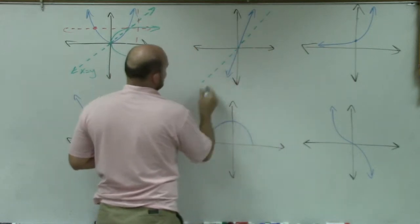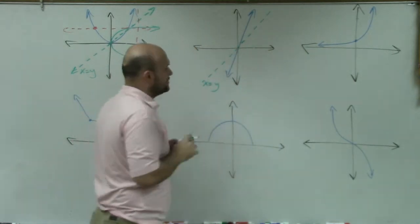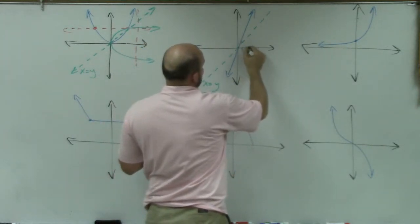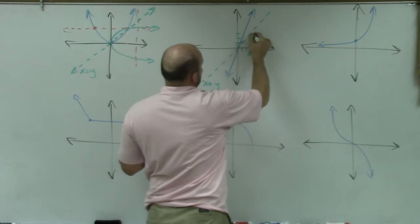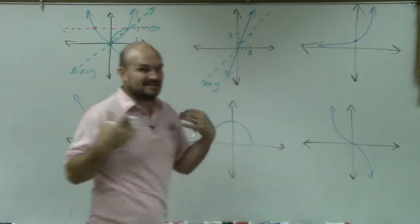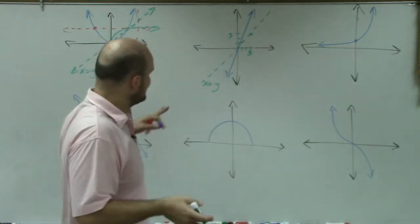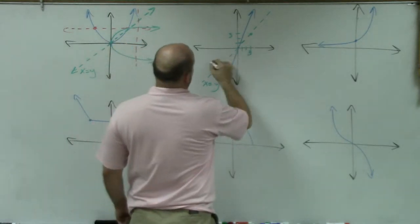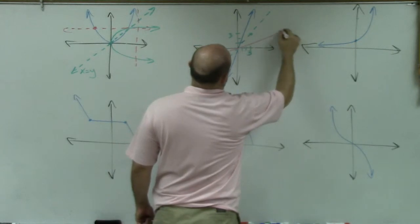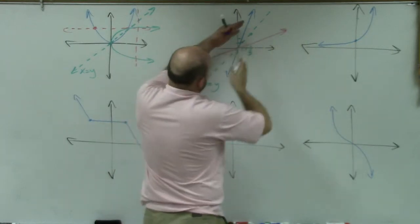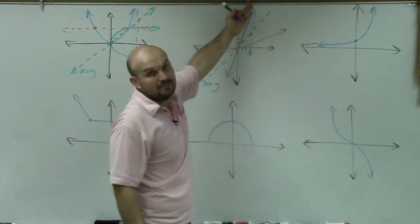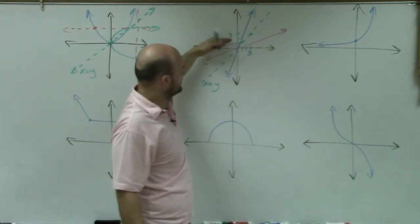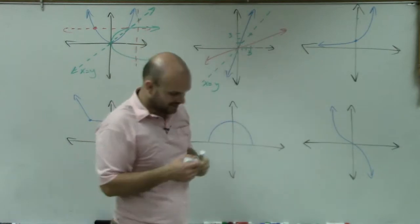The y equals x line means whatever x equals, y equals. So if x equals 3, y equals 3; if x equals 10, y equals 10 — it's a nice diagonal line. To graph the inverse, as I reflect it, whatever's above the line now goes below and whatever's below goes above. Over here, even though this is getting very close to being horizontal, it's actually not exactly horizontal.